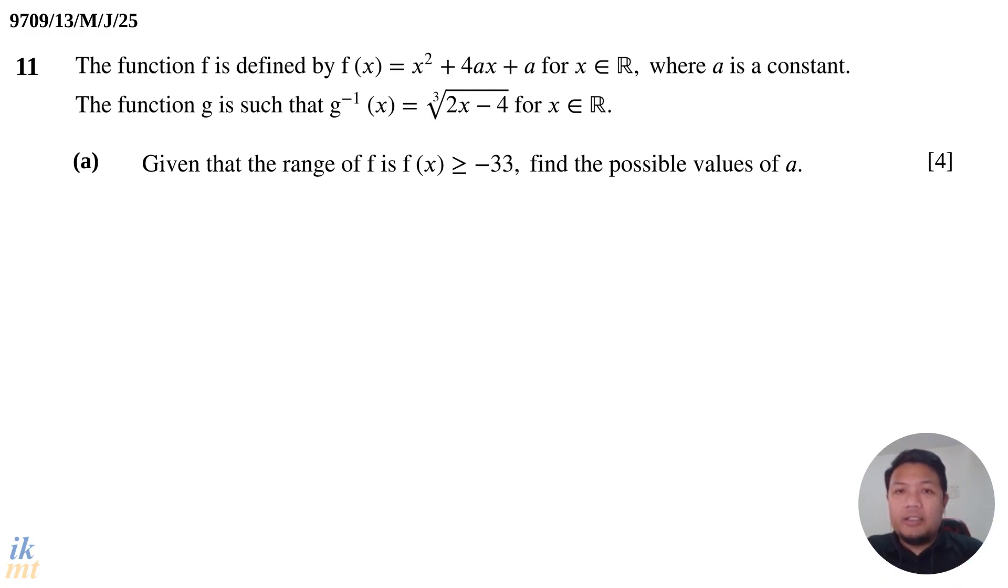Question 11 is the last question in the paper, and it's related to functions and inverse functions. Let's just go through the question. The function f is defined by f(x) equals x squared plus 4ax plus a for all real values of x, where a is a constant. And then there's another function defined, function g, such that the inverse of g, or g inverse of x, is equal to the cube root of 2x minus 4, and x is any real number.